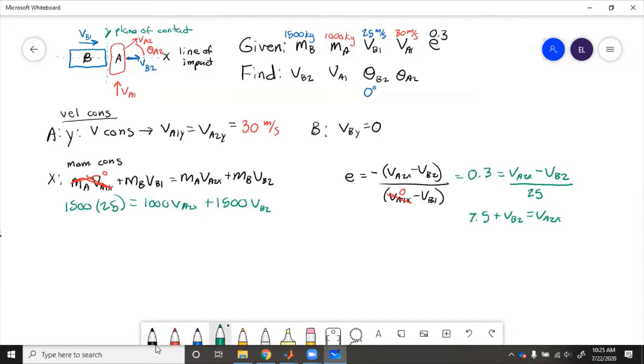And then here, 37500 equals 1000 VA2X, which is 7.5 plus VB2 plus 1500 VB2. So 30,000 equals 2500 VB2. 12 meters per second equals VB2.